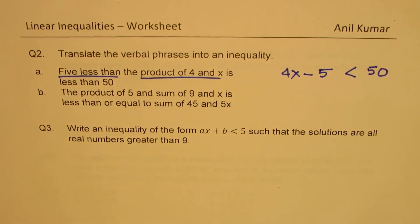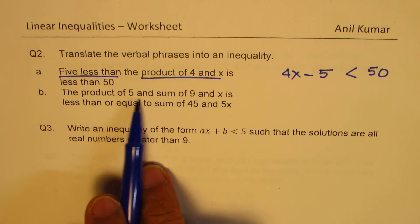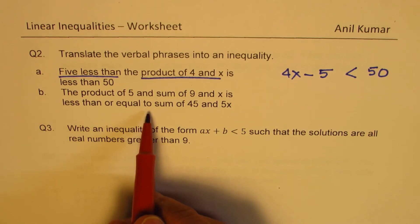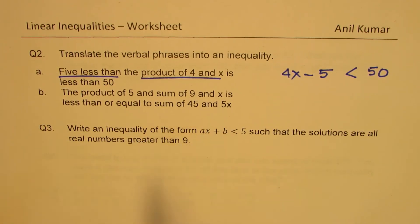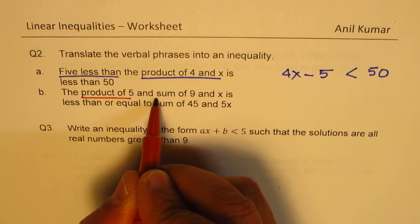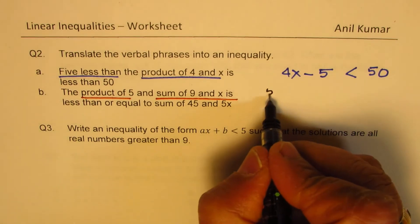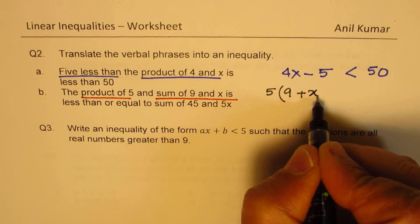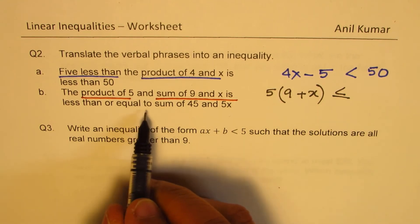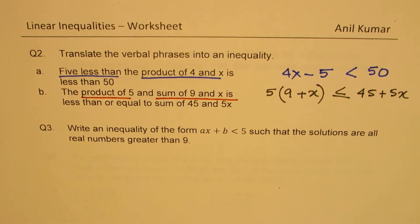Part B: the product of 5 and the sum of 9 and x is less than or equal to the sum of 45 and 5x. There are two things being multiplied: 5 and the sum of 9 and x. So we write 5 times (9 plus x) is less than or equal to 45 plus 5x.